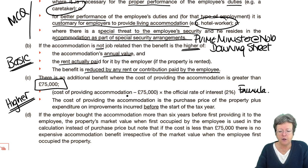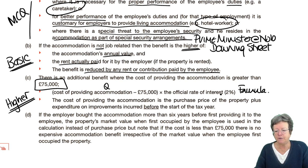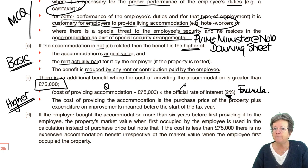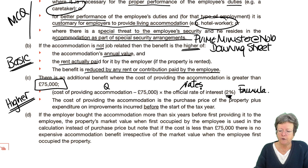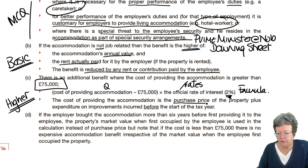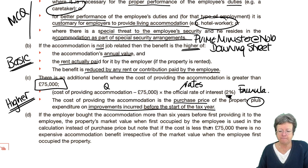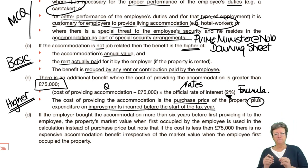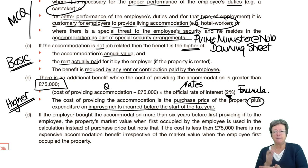The formula for the higher benefit is: cost of providing the accommodation minus £75,000, multiplied by the official rate of interest. The cost is the purchase price plus any improvements before the start of the tax year. If the official rate isn't given in the question, check the rates — don't guess. So: cost of accommodation plus improvements before 6th April 2022, minus £75,000, times the official rate of interest gives the benefit in kind.